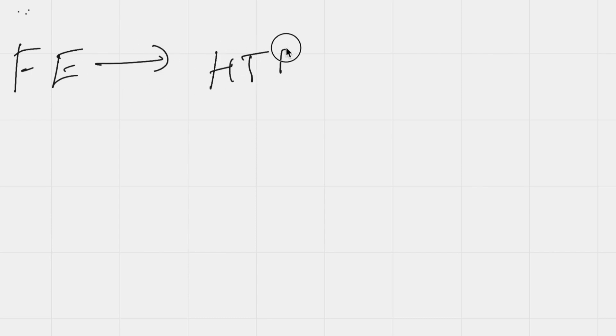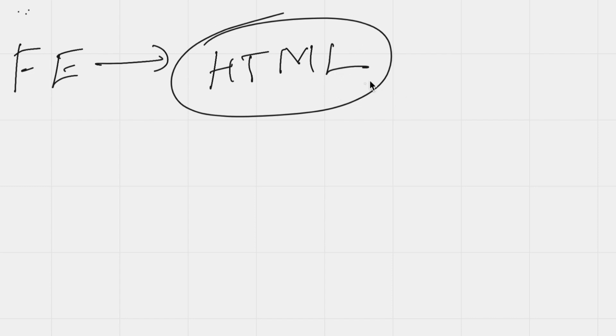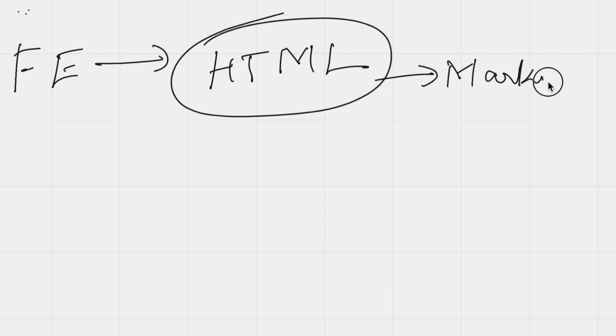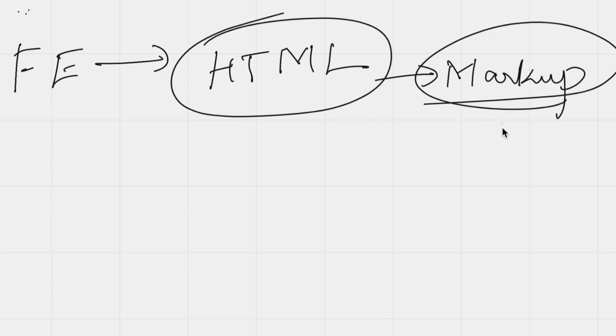Now, for front-end: how do you start? The first language is HTML. HTML is a markup language — it is a skeleton. So you can see there is a navigation bar, a search box, headings, and if you scroll down, a footer.